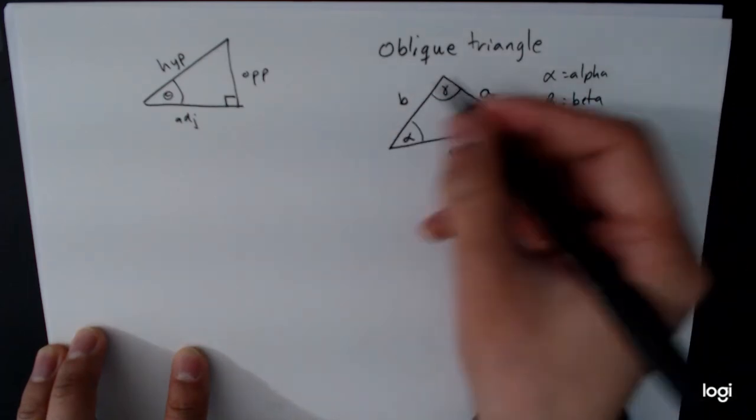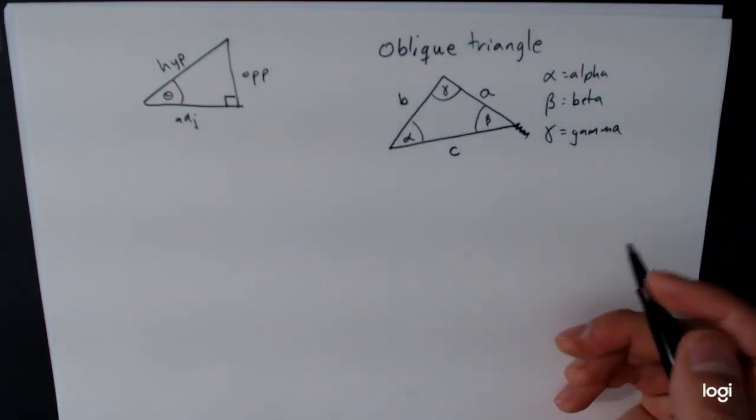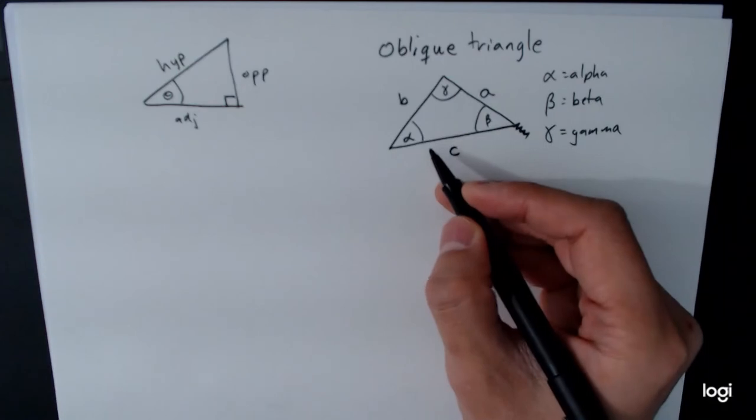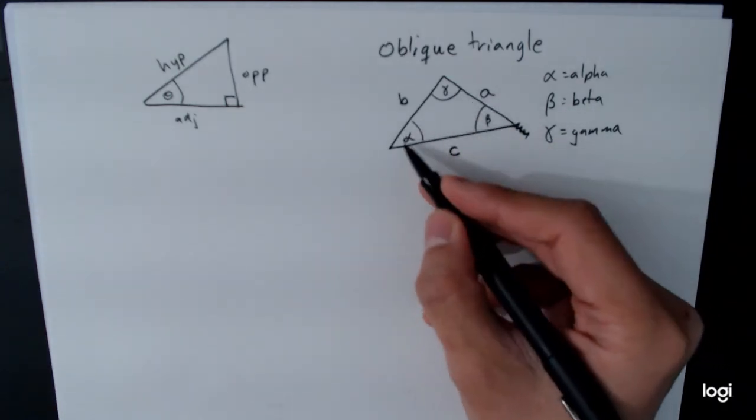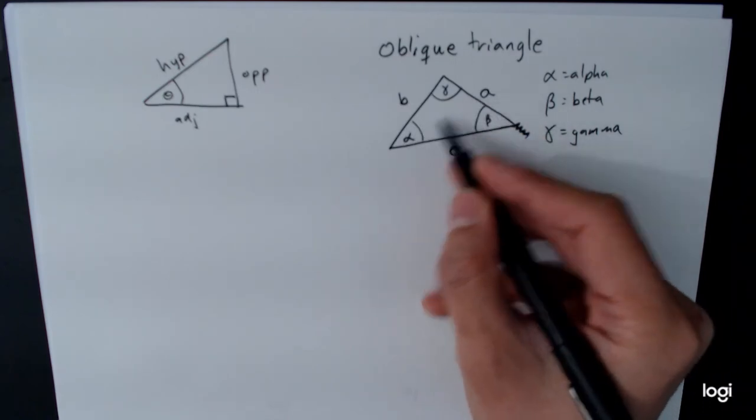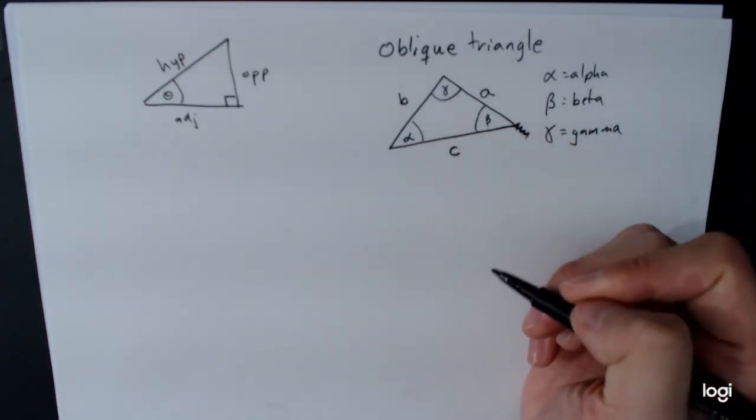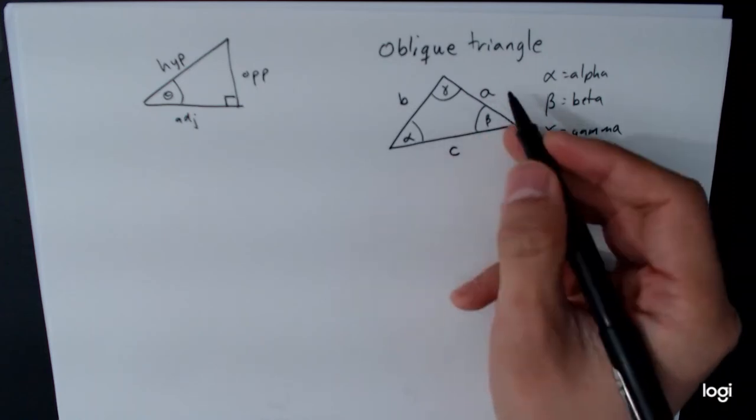And so by labeling a triangle like this, we now have a consistent way of thinking about it. Opposite of the angle, or sorry, I shouldn't use the word opposite there, but the angle, well, there's no other real word for it. The side opposite the angle, which is over here, is going to be the corresponding label.